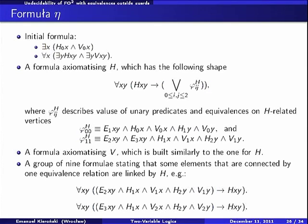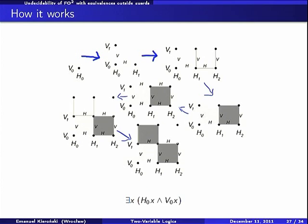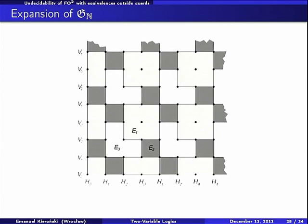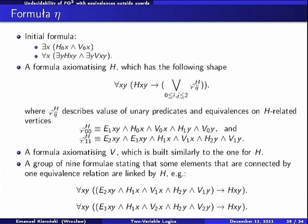And for example, H, phi H zero, zero tells us about zero, zero is here, for example. This is an element of type zero, zero. So it says that if there is H connection which starts at this point, then the second point should be, should have coordinates one, zero, and the connection between them should be only E one equivalence connection. And we have similar formulas for all possible combinations of coordinates.